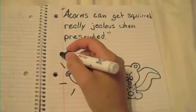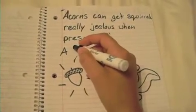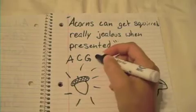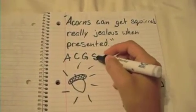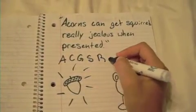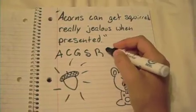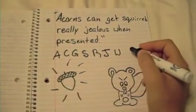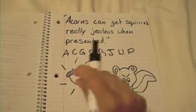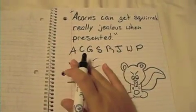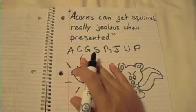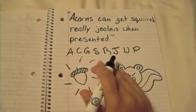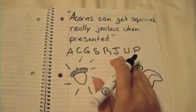Which makes it A, C, G, S, R, J, W, and P — which are art and architecture, cities, government, social class, religion, job specialization, writing, and public works.